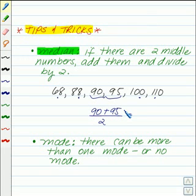Welcome back. I hope when you added 90 plus 95 and divided by 2, it gave you 92.5. So in this case, our median is 92.5, because we had two middle numbers, so we found their average.